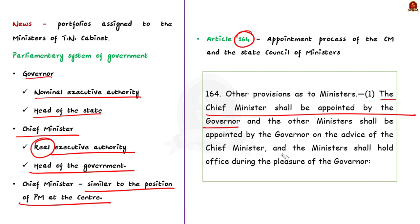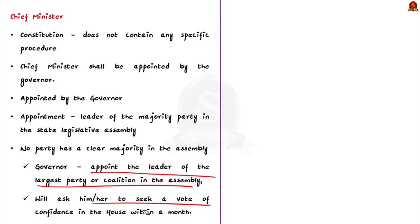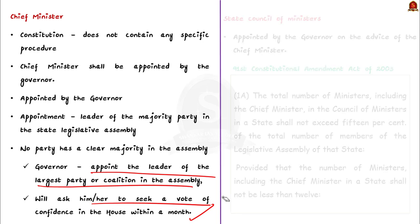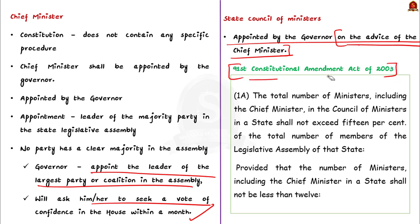Usually the governor appoints the leader of the majority party in the state legislative assembly as Chief Minister. In situations where no party has a clear majority, the governor using his discretion will appoint the leader of the largest party or coalition and ask him or her to seek a vote of confidence in the house within a month. The state council of ministers, as specified in Article 164, are appointed by the governor on the advice of the Chief Minister. The 91st Amendment Act of 2003 added a provision that the total number of ministers including the Chief Minister shall not exceed 15% of the total strength of the legislative assembly.